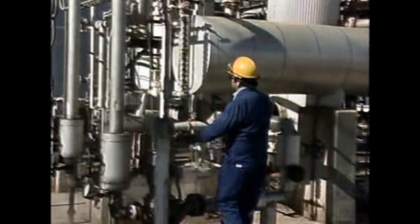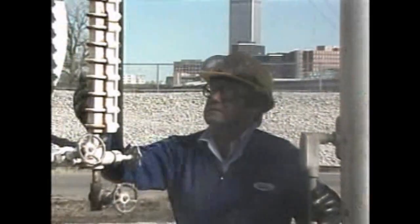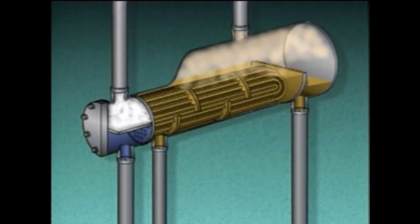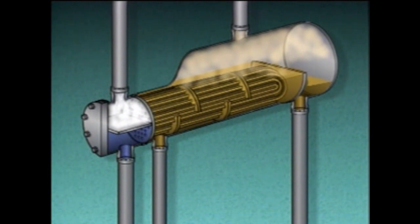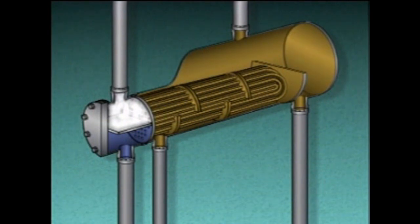As an operator, you may be responsible for the proper operation of reboilers. Like other process components, reboilers should be checked periodically. One important check is the level in the reboiler, observed via the site glass. The tubes must be covered with process liquid — if the level drops too low, the tubes could overheat and be damaged. On the other hand, a level that is too high can also be a problem: if the level in a kettle-type reboiler gets too high, the vapor and liquid will not separate properly and a mixture may flow back into the distillation column.